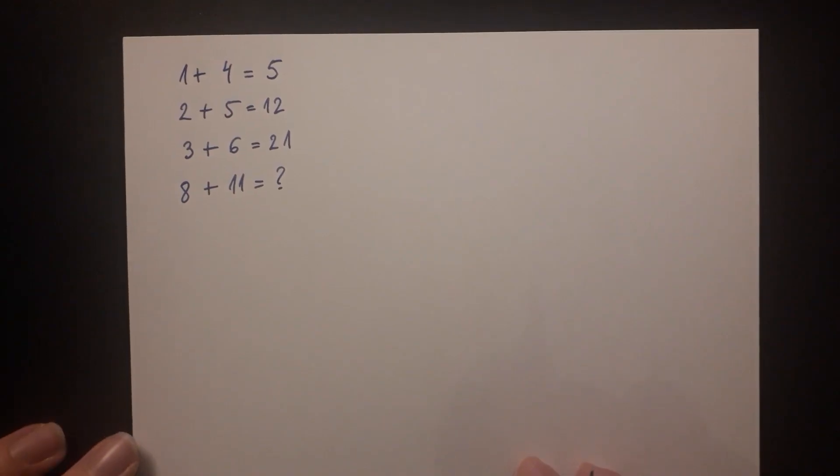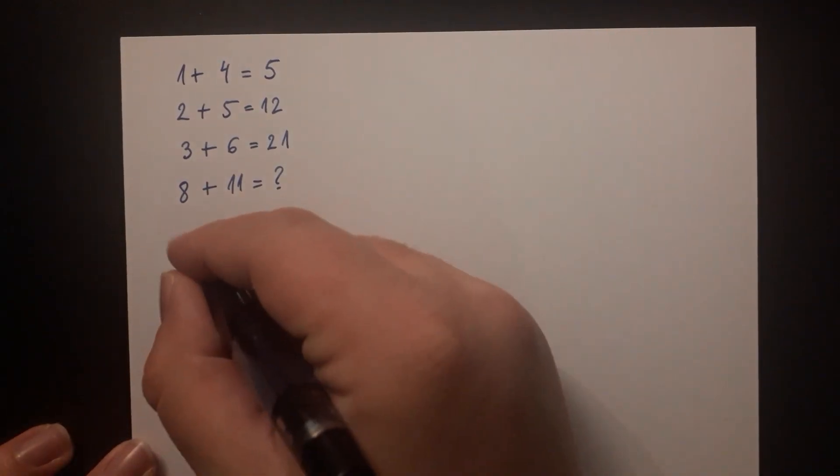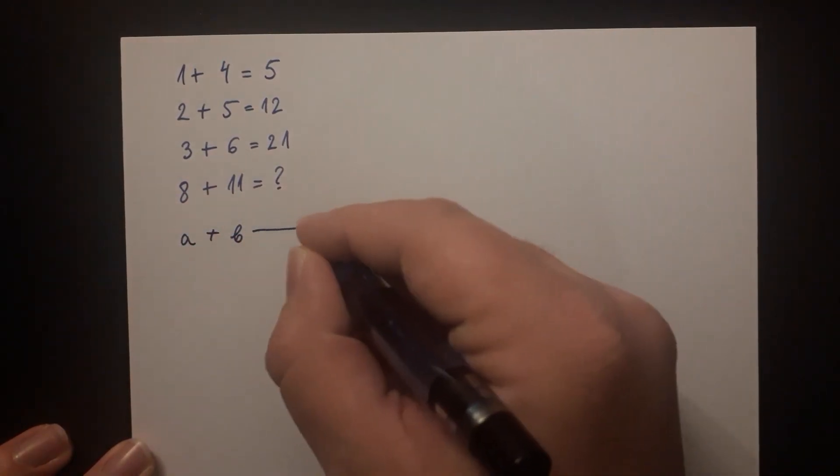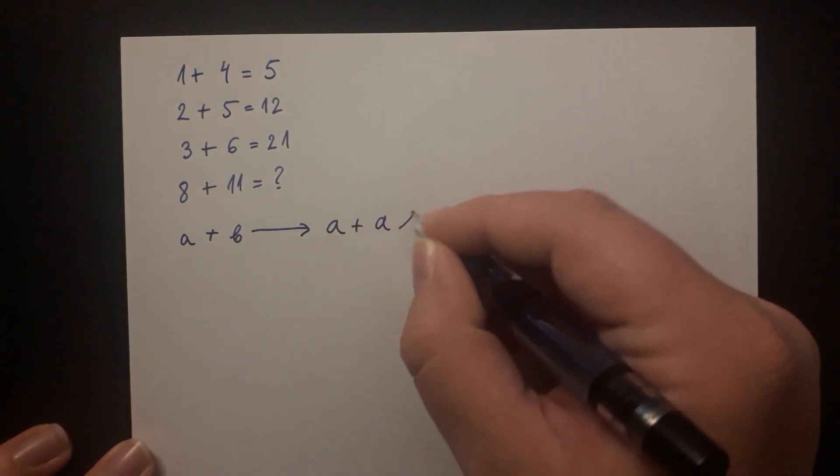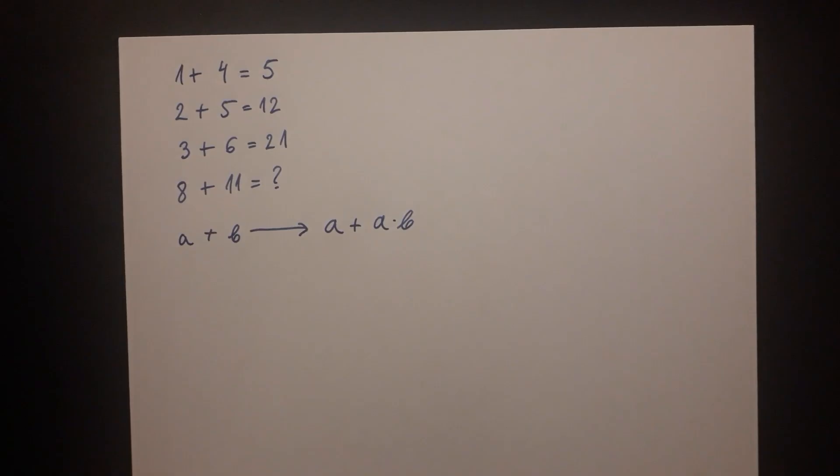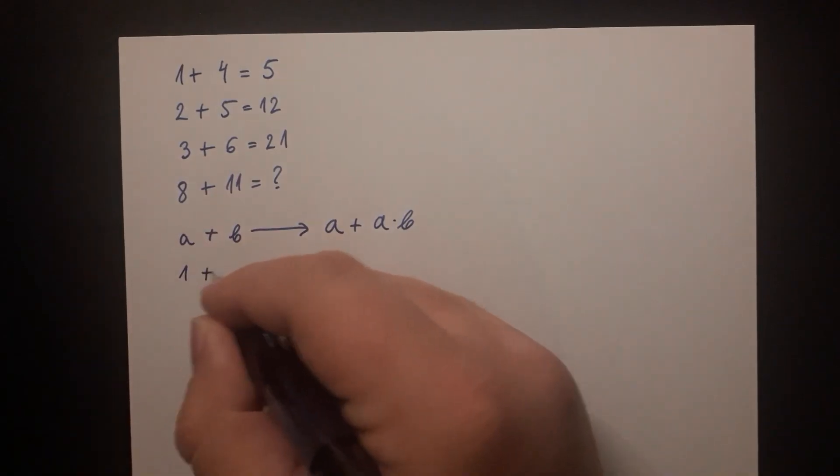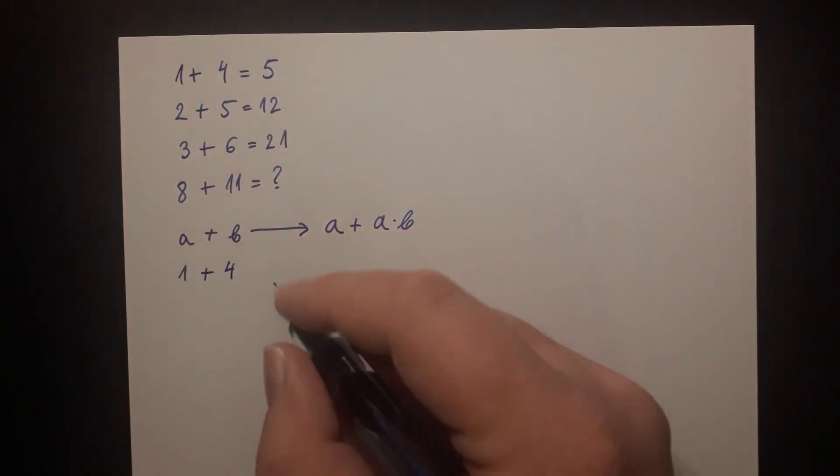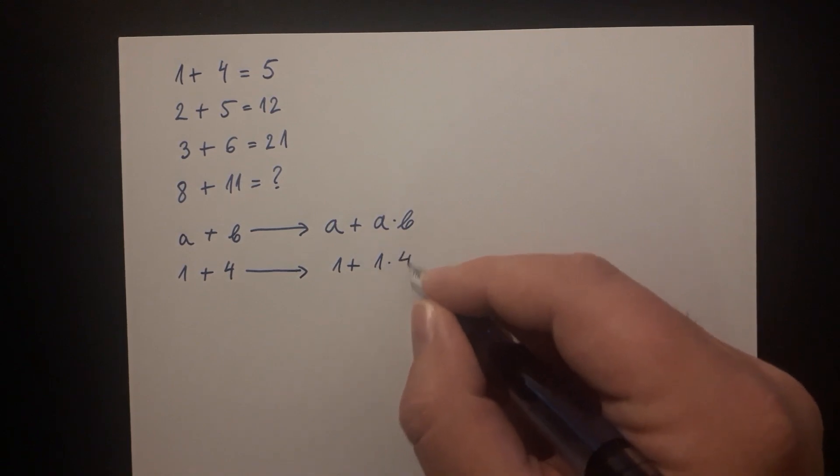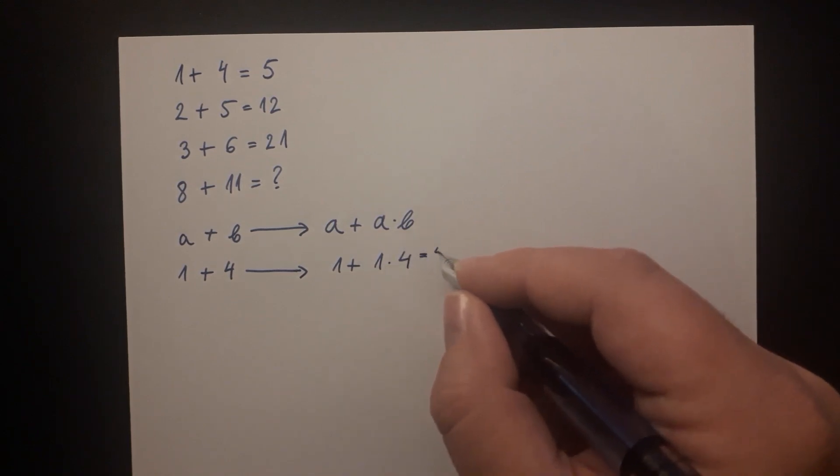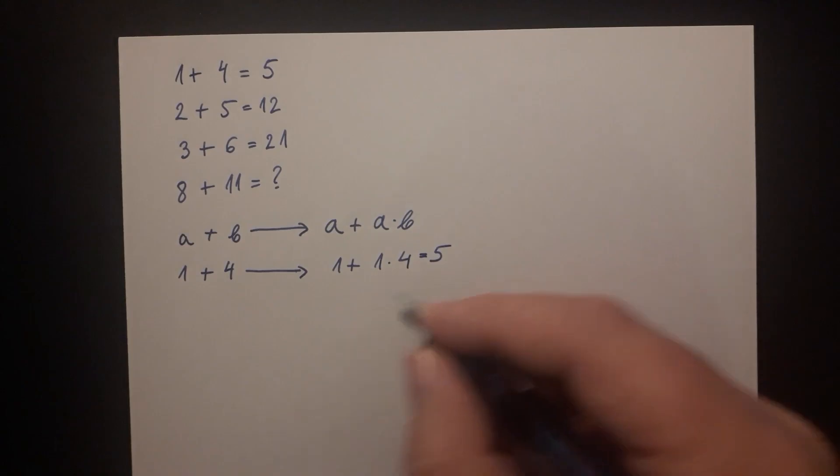So in each line you will take the term a plus b and assign to it the value of a plus a multiplied by b. The first line has a term 1 plus 4 and by using this rule we should interpret 1 plus 4 to be 1 plus 1 multiplied by 4 which is equal to 5.